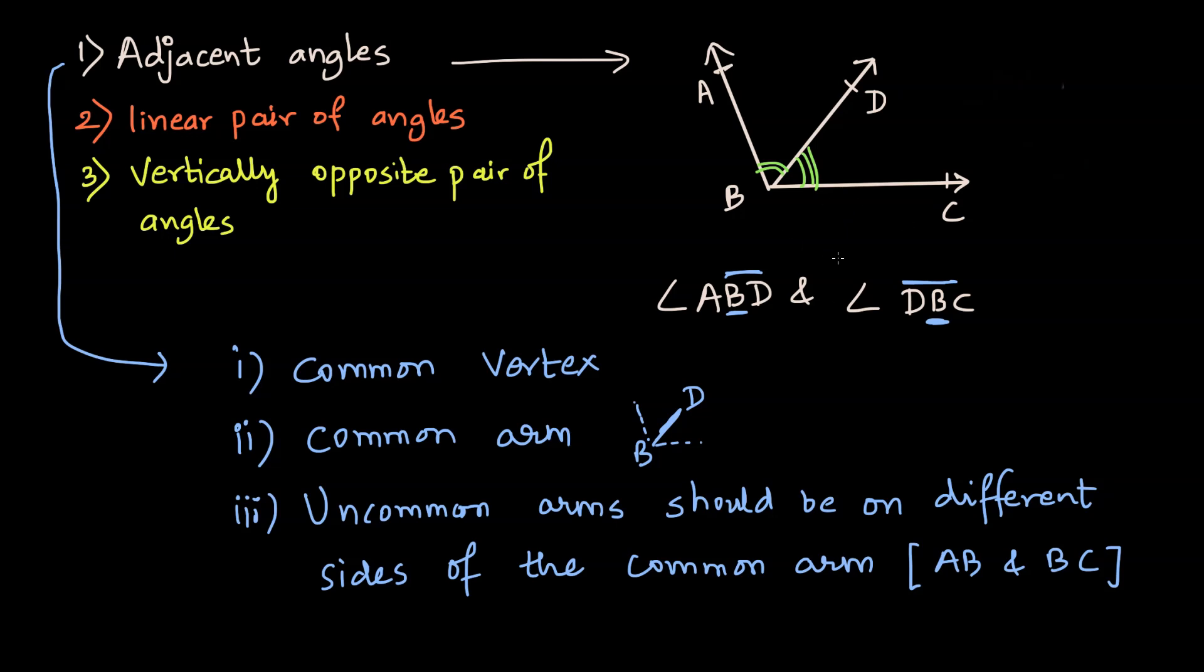Now what is not the example of the adjacent angles in here? Now with the same pair of angles, if I write angle ABC and angle ABD. So if I have to mark these, this is angle ABC and this is angle ABD. I will write angle ABD in orange.